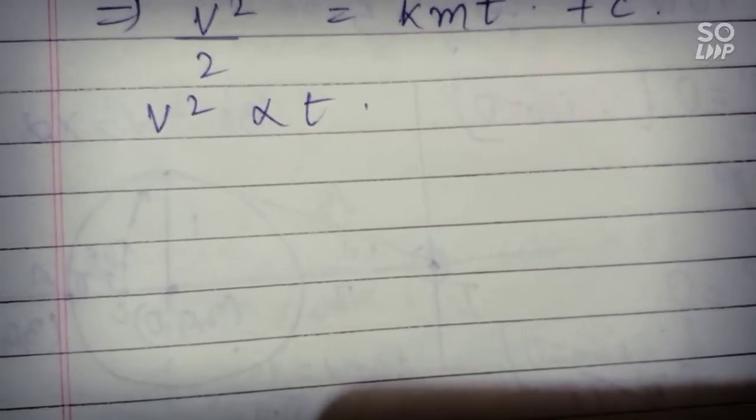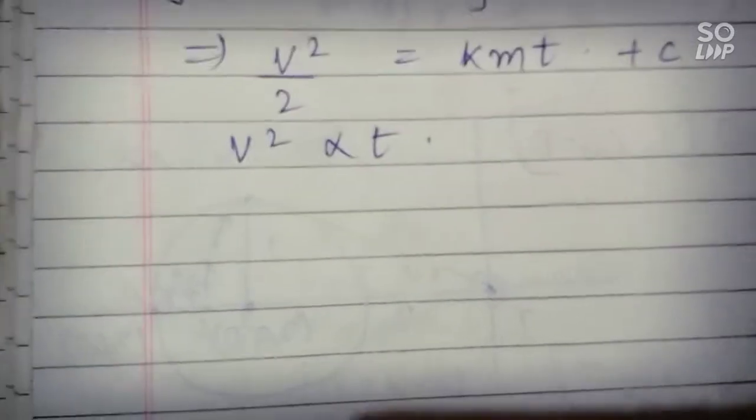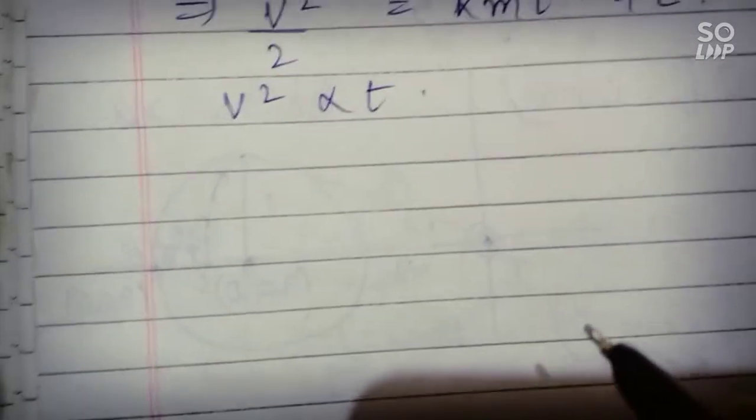Now we can write V as X by T, where X is the distance and T is the time.